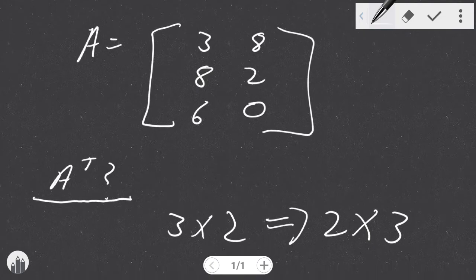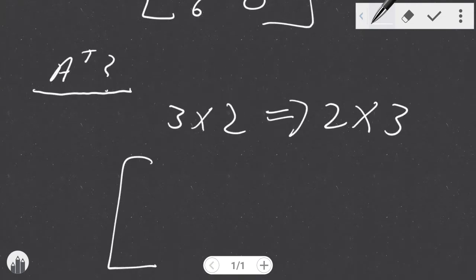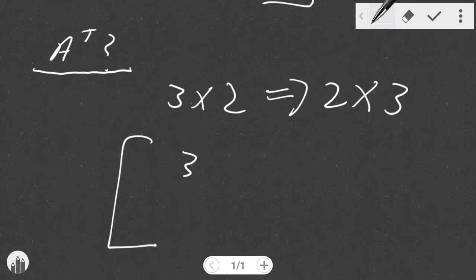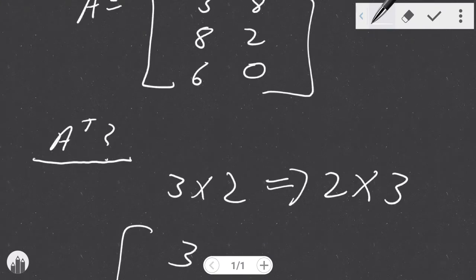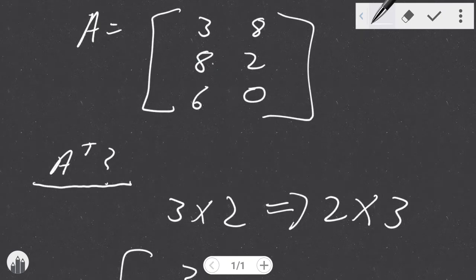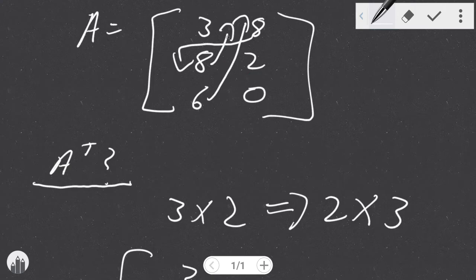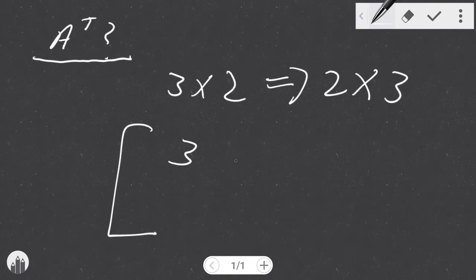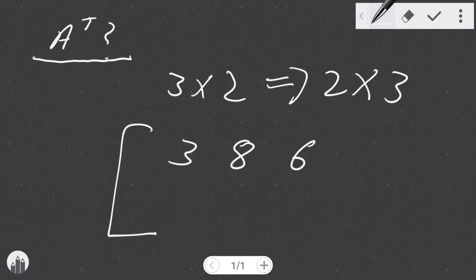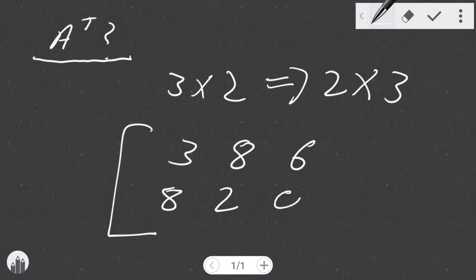Simply said, converting this would be as such. Three would remain here. Then we'll start from eight. Eight will go this direction. Six would go that direction. Eight will come back this direction. Two would also come back this direction, taking the place of the rows instead. So three, eight, six - these were the rows before, they become the columns now. And the columns before would become the rows, namely eight, two, and zero.